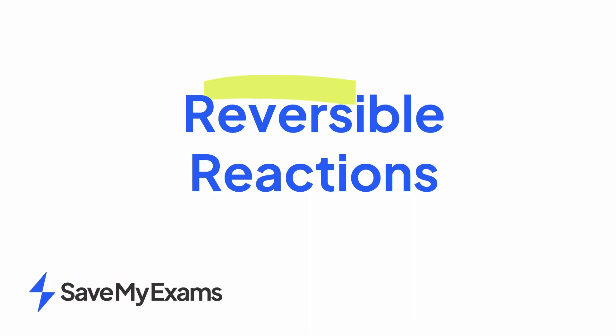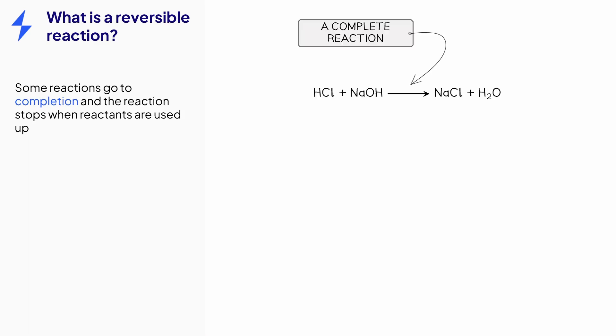This video is on the topic of reversible reactions. Many reactions go to completion, which means that when one of the reactants is used up, the reaction will stop. In this example of a complete reaction, the reaction stops when either the hydrochloric acid or the sodium hydroxide is used up.